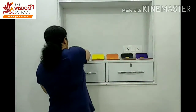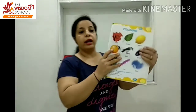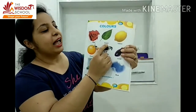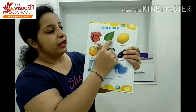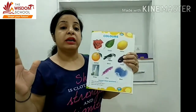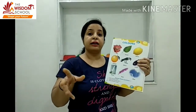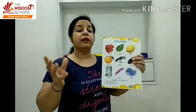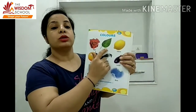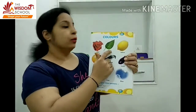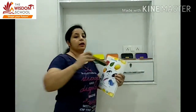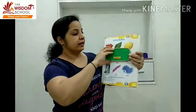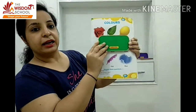Next color is green. Look here. This is a leaf. Which color is green? There are big trees. There are green leaves. Grass is green. You also have a green dress. This color is green. Look here — which color is green? Green color.